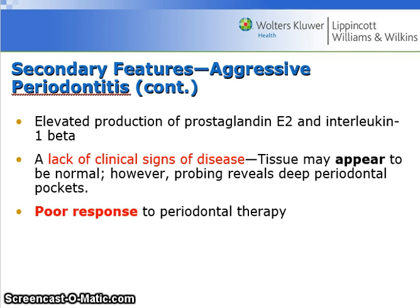Secondary features also include elevated production of prostaglandin E2 and interleukin 1 beta. A lack of clinical signs of disease is also present — the tissue may appear to be normal. However, probing reveals deep periodontal pockets and there is a poor response to periodontal therapy.